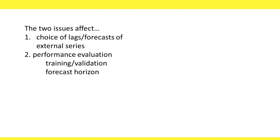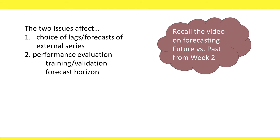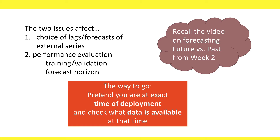These two issues affect two choices: the form of the external series and the lags we use, and the performance evaluation. In performance evaluation, we have to think about what information is available in the training period and what is the de facto forecast horizon. This is similar to the discussion from week two about forecasting the future or the past — the bottom line is to pretend you are at the exact time of deployment and check what data is available at that time.